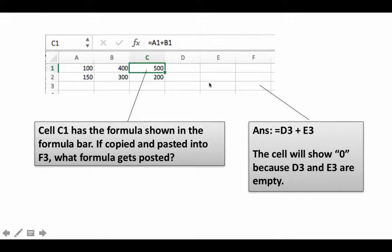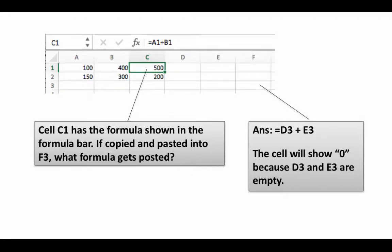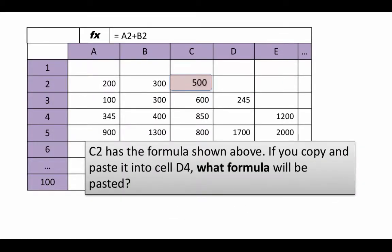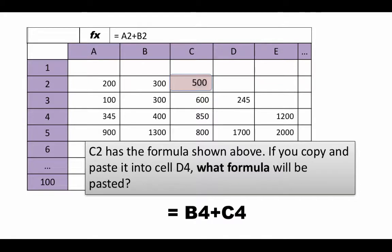Of course D3 and E3 are both empty and therefore F3 will actually show the result of 0. This is one of the important concepts in Excel and therefore it's worth getting a lot of practice. So here goes one more. Now let's say cell C2 has the formula equals A2 plus B2 — two cells to the left plus one cell to the left, same row. Now if you paste it into D4, what formula will get pasted? Clearly what's going to get pasted is equals B4 plus C4, because two cells to the left is B4, one cell to the left is C4.